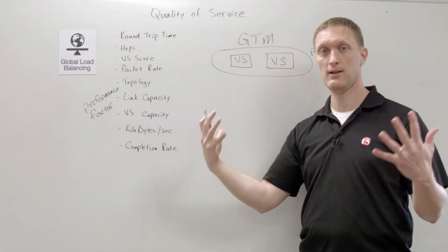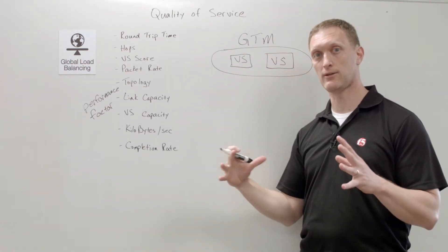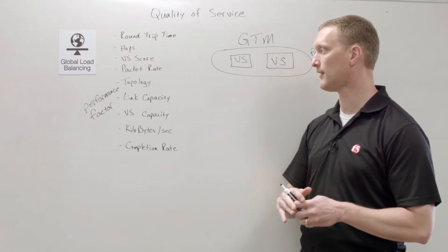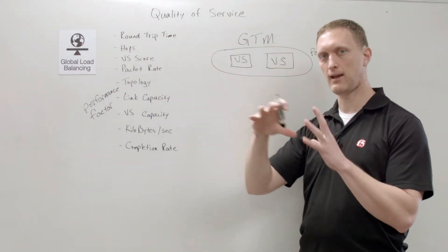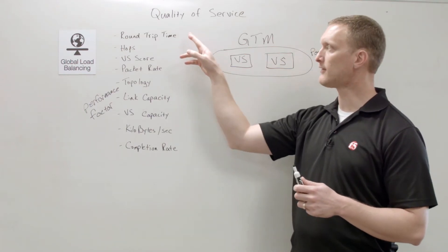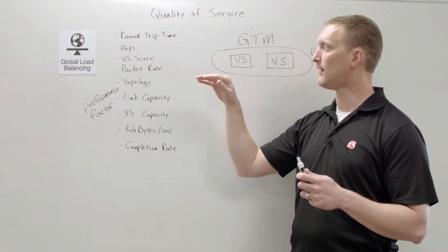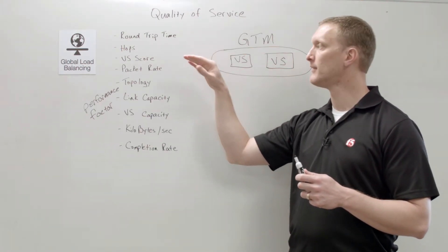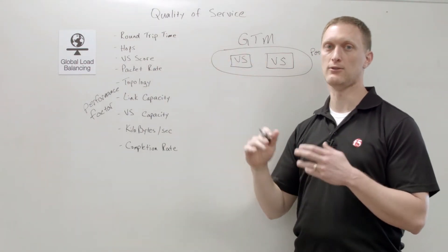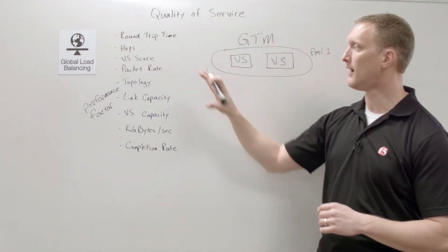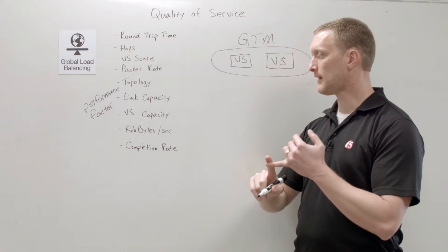This is a pretty powerful load balancing mode because it's looking at all of those things together. One thing to mention: on round trip time and hops, if a value is selected for both together, the GTM will set hops to zero and round trip time will use that value — so it's not going to use both of those at the same time.